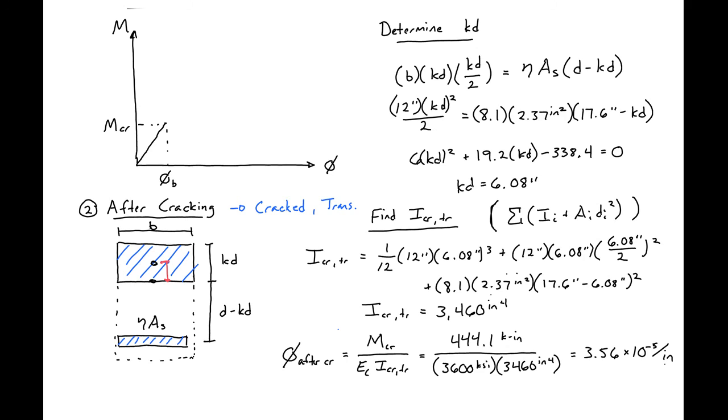Now we can plot this point on our moment curvature plot. You can see before we found our M cracking and our before-cracking curvature. Now we just found our after-cracking curvature. We can plot it here, and we'll have a straight line in between. This is essentially the curvature that will happen when we go from before-cracking to after-cracking without any additional moment.